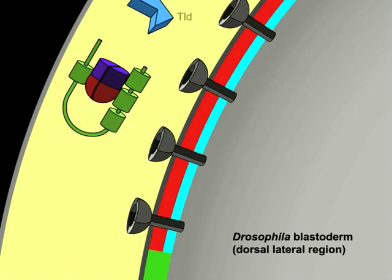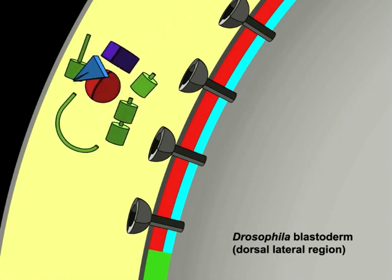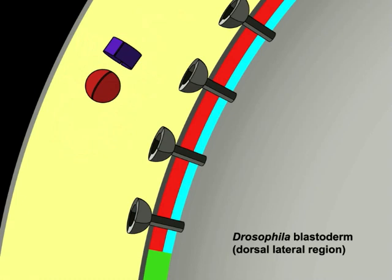As the complexes move towards the dorsal midline, they encounter a protease, tolloid, which cleaves SOG when it is bound to its co-substrate DPP. This results in the destruction of the complex and the release of DPP.